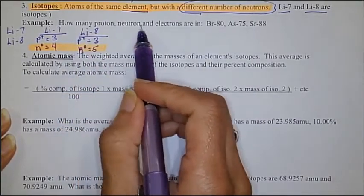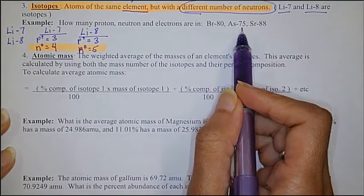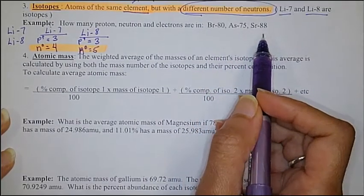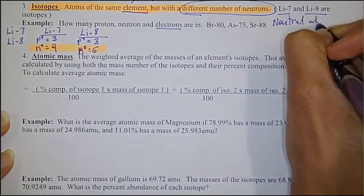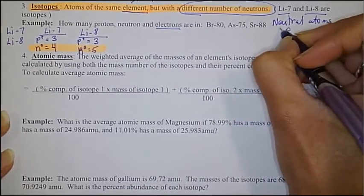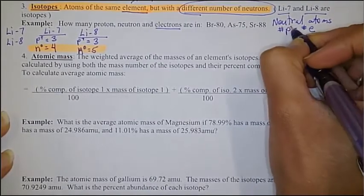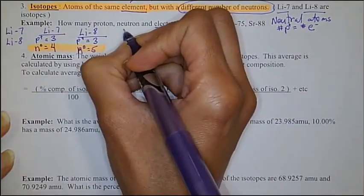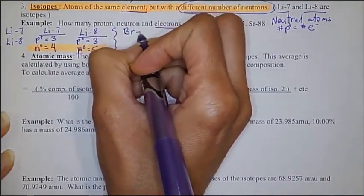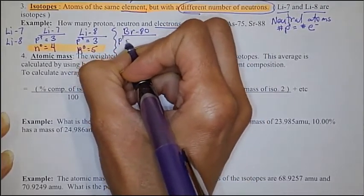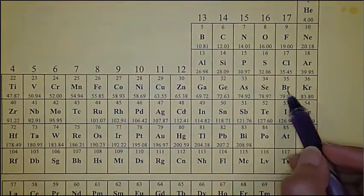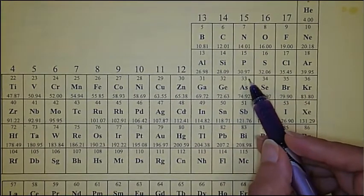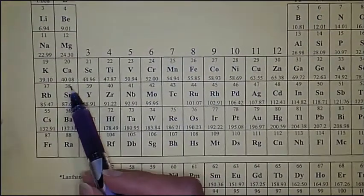The example says: how many protons, neutrons, and electrons are in bromine-80, arsenic-75, and strontium-88? Since we are talking about electrons, these are all neutral atoms. In a neutral atom, the number of protons equals the number of electrons. For bromine-80, bromine is on the periodic table with atomic number 35. Arsenic has atomic number 33, and strontium has atomic number 38.